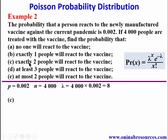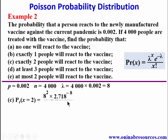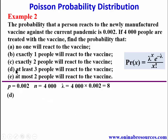For part (c), exactly two people will react to the vaccine, so x = 2. P(X=2) = 8² × 2.718^(−8) / 2!. Simplifying gives a probability of 0.01074.